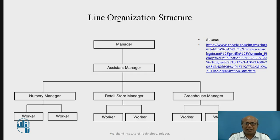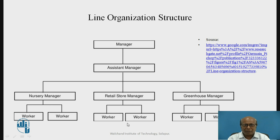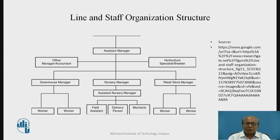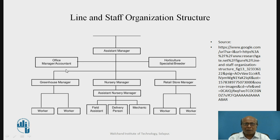Now, different organizational structures. In a pure line organizational structure, there is a top manager, then an assistant manager, below whom there are retail stores managers — nursery manager, greenhouse manager — and below them there are workers. The authority flows from top to bottom in one line. That is the line organizational structure. In line and staff, apart from this line, there are some staff people introduced who can give advice to the line manager — for example, horticulture specialized knowledge, or office management and accounts — they will give advice to the line people. This combination is known as line and staff organization.